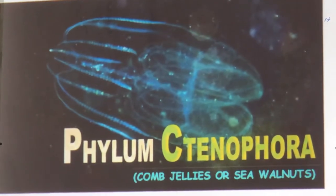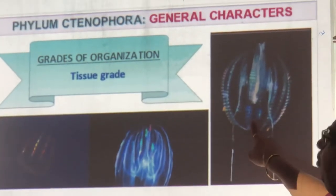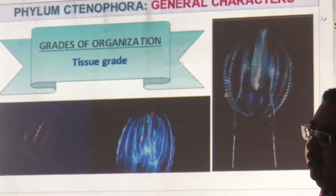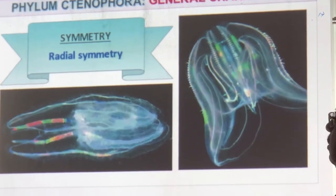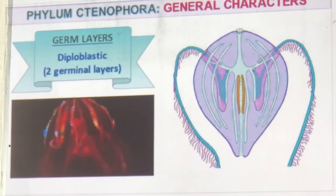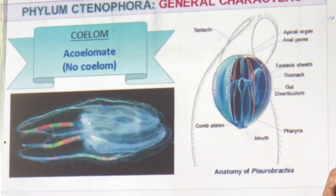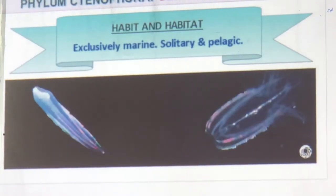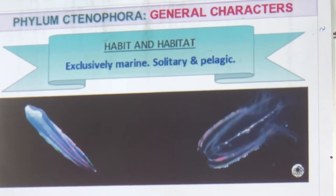Phylum Ctenophora — called comb jellies or sea walnuts. They are bioluminescent and found at the deep ocean bottom where you see flickering lights. They do not come to the surface; very difficult to see them in the day. They show tissue grade, are radially symmetrical, diploblastic (ectoderm and endoderm), no coelom, marine, found alone (pelagic), and are bottom feeders feeding on scraps at the bottom.